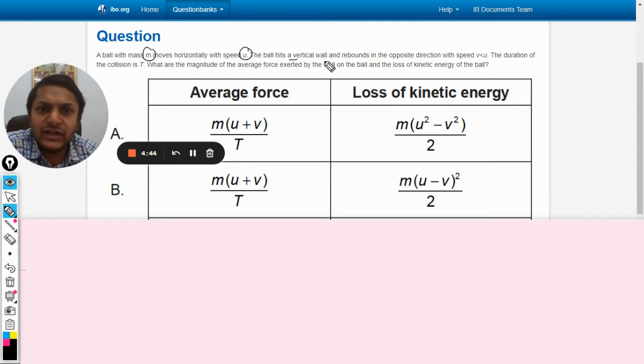The ball hits a vertical wall and rebounds in the opposite direction with speed v, which is lesser than u. So some energy has been lost, so it's not an elastic collision, it's an inelastic collision.